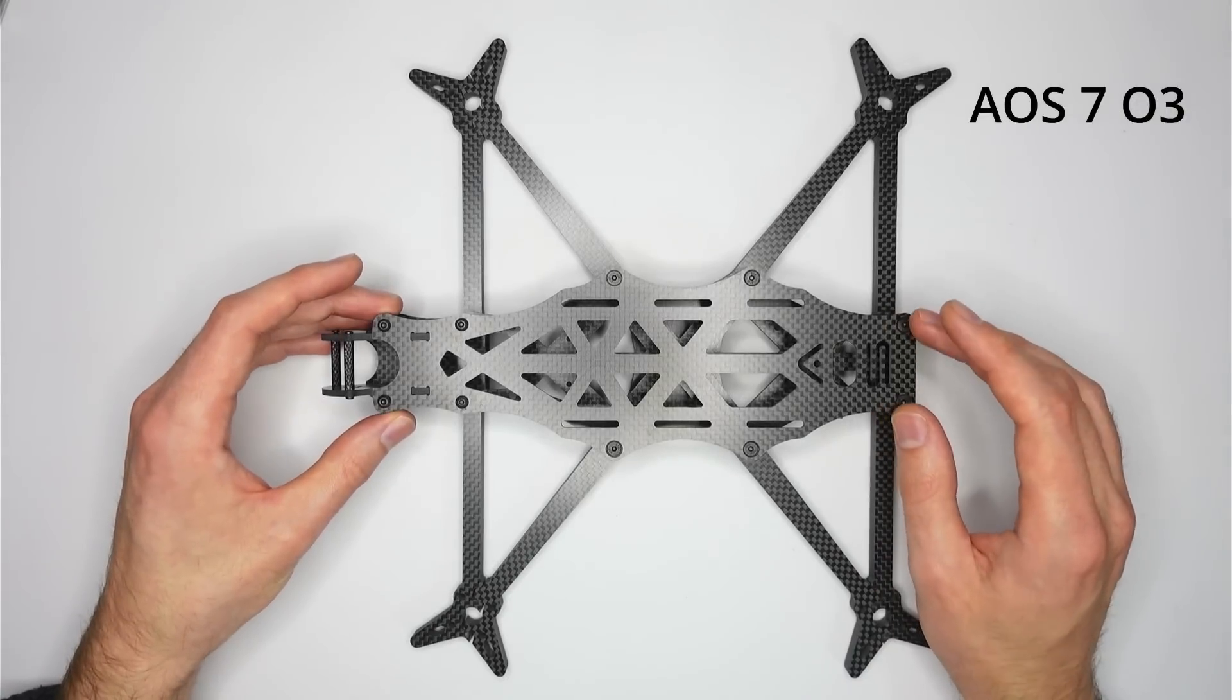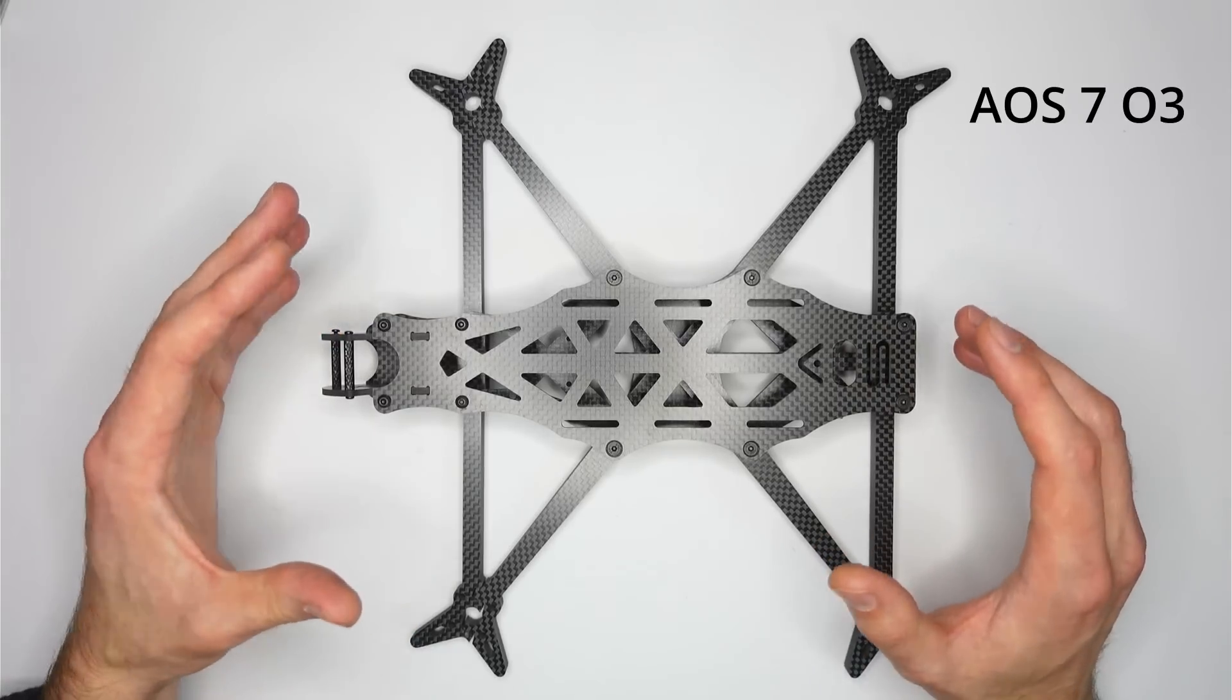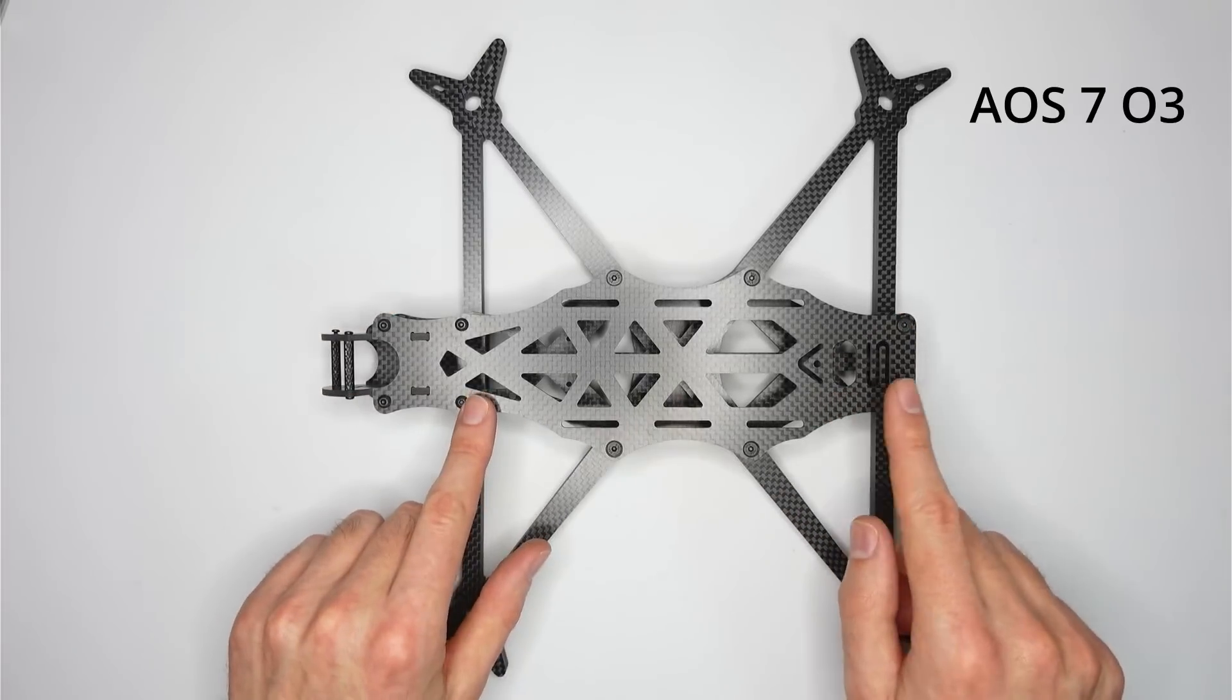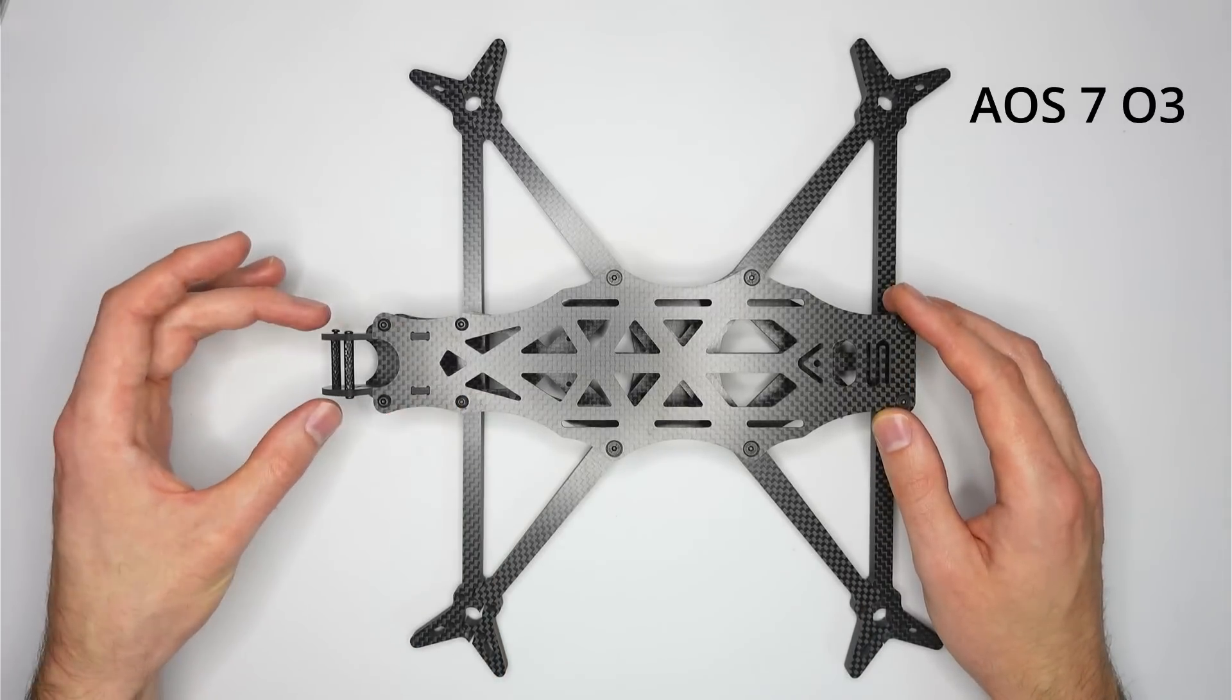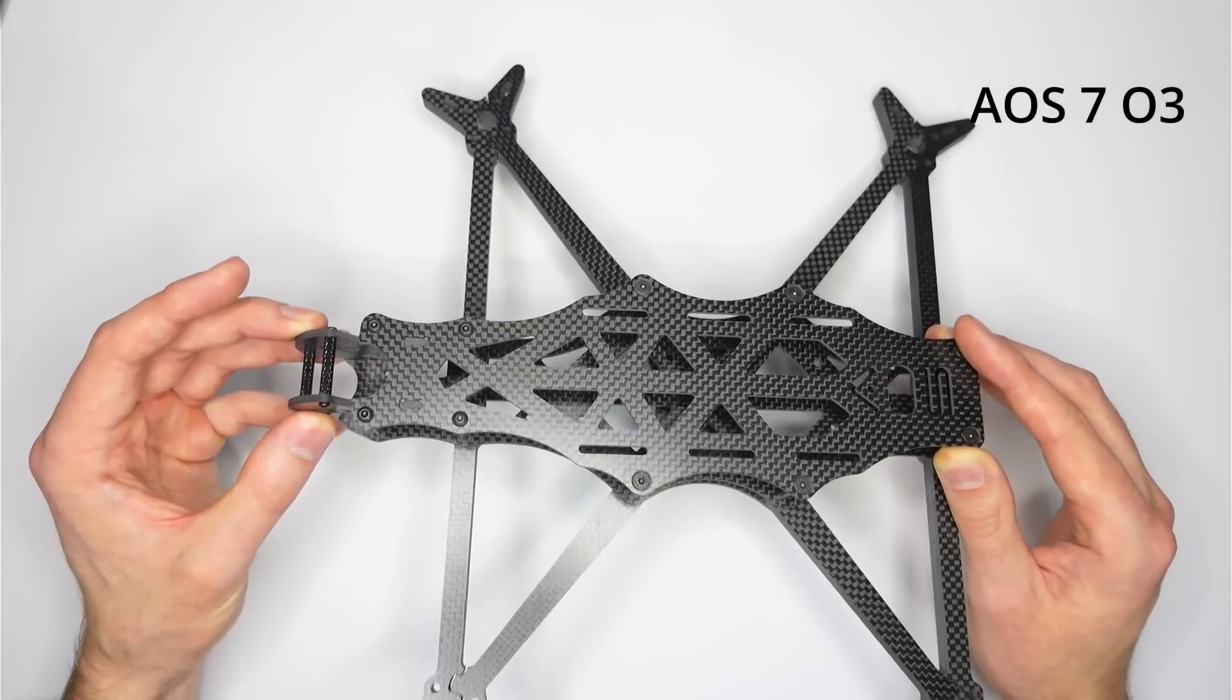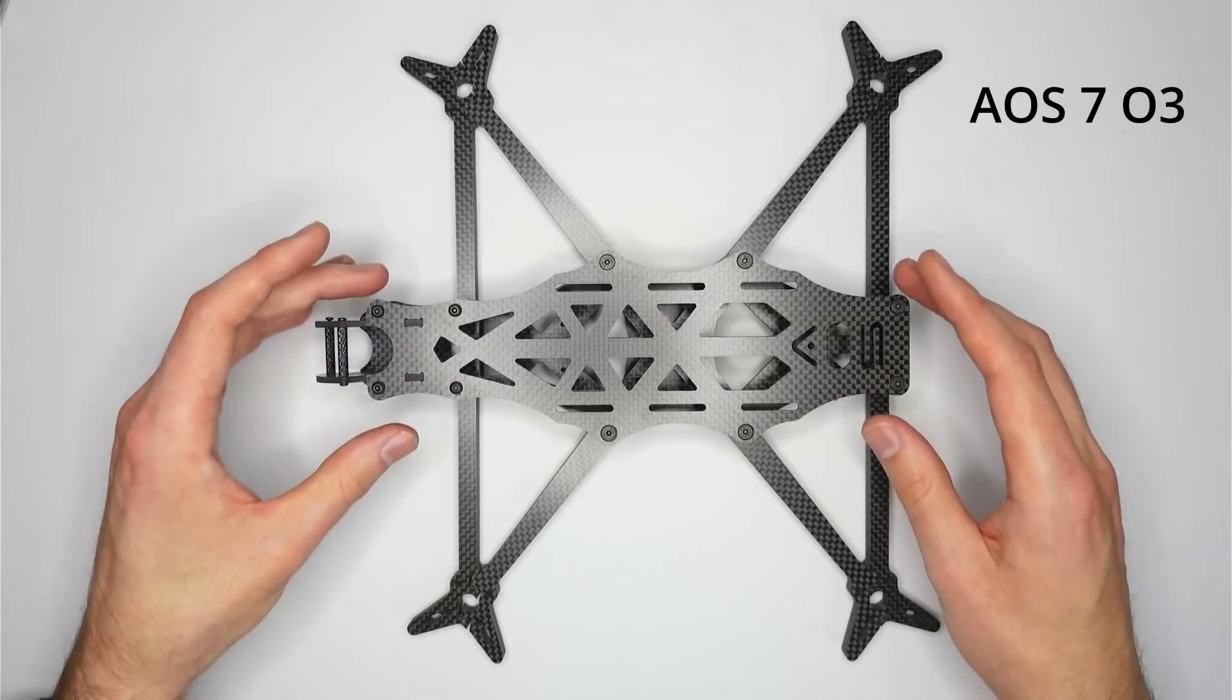This is the AOS 7 O3, and this is a 7-inch platform for freestyle, or chasing fast targets, mountain surfing, all of that type of stuff. The main differences for the O3 edition of this frame is that it's been changed to be compatible with the camera plates from the AOS 5 and 5.5 O3, they all use the same camera plate, and the shape of the top and main plates has been changed slightly to improve the aesthetic a little bit.